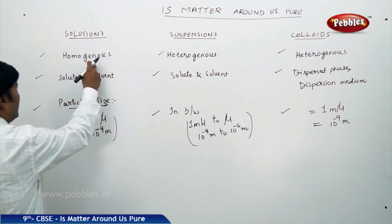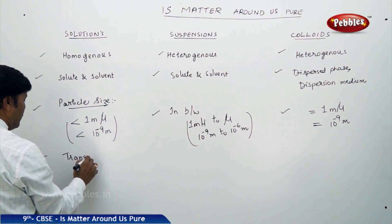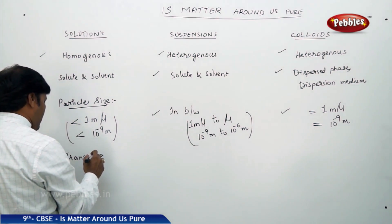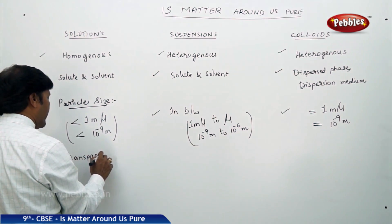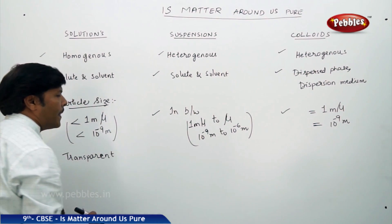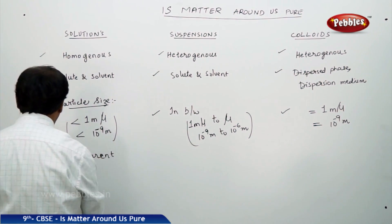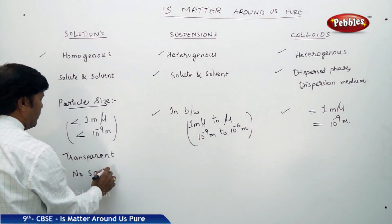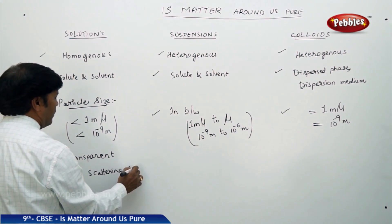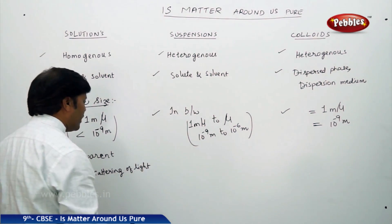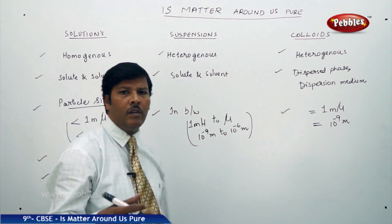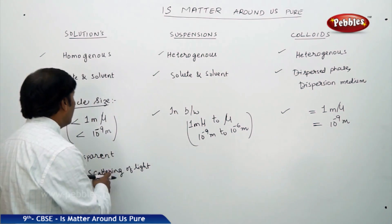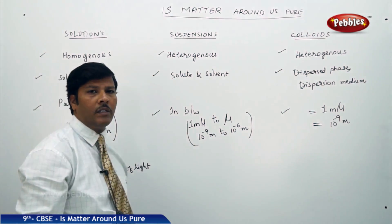True solutions are homogeneous, so they are transparent. Being transparent means there is no scattering of light. The property in which a solution rotates plane polarised light in a particular direction is called the Tyndall effect. In true solutions, you do not find any Tyndall effect.